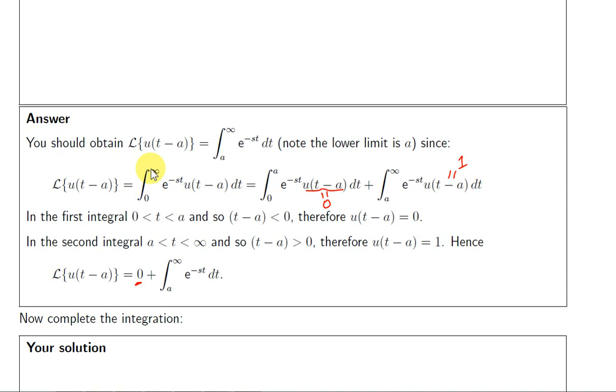So we can split the integral from 0 to infinity into two integrals. We can integrate from 0 to a, where a is the positive number, and then we integrate from a to infinity. So essentially this integral is just the integral from a to infinity of e^(-st) with respect to t.